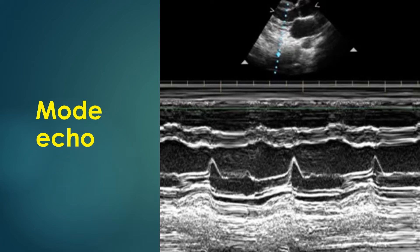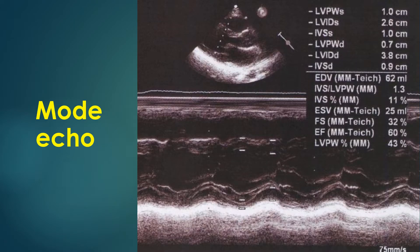The vertical axis in this image is depth and the horizontal axis is time. Important measurements taken are: LVPWS (left ventricular posterior wall systolic), LVIDS (left ventricular internal dimension systolic), LVPWD (left ventricular posterior wall diastolic), IVSD (interventricular septum diastolic), EDV (end diastolic volume), and ESV (end systolic volume).